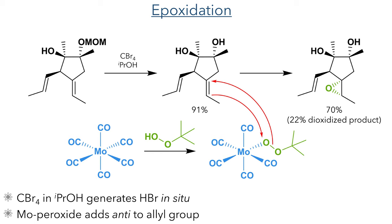This product was then oxidized using molybdenum hexacarbonyl and tert-butyl peroxide. The peroxide first coordinates to the metal complex and then reacts with the more substituted alkene from the face of the molecule anti to the allyl group, producing the mono-epoxidized product in a 70% yield, together with a di-oxidized product where both alkenes reacted in a 22% yield.